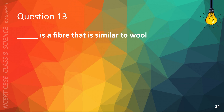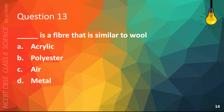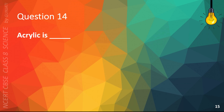Question 13. Blank is a fiber that is similar to wool. A. Acrylic, B. Polyester, C. Air, or D. Metal. The correct answer is A. Acrylic. Question 14. Acrylic is: A. Natural, or B. Synthetic. The correct answer is B. Synthetic.